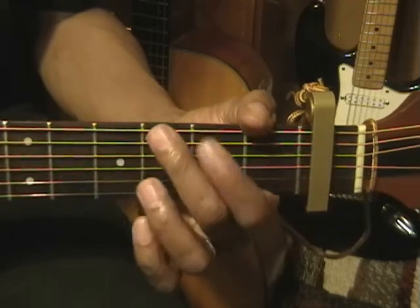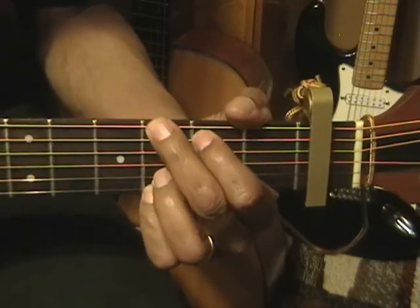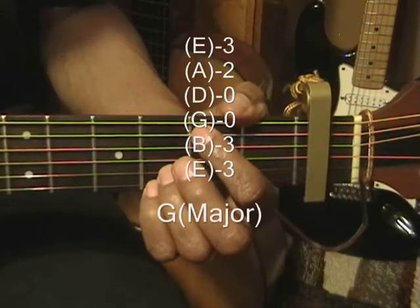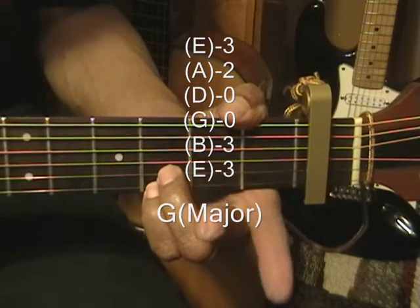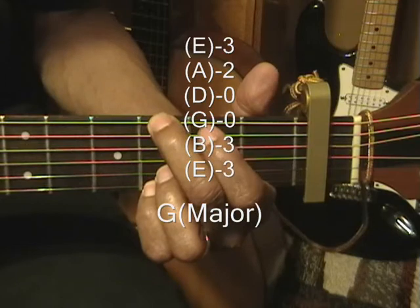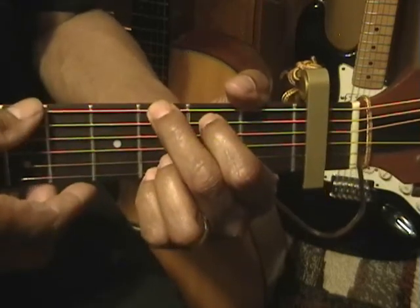Our last chord is G major. We have our ring finger and pinky finger on the third fret, B string and high E string. And we have our middle finger on the low E string, third fret. And the first finger on the A string, second fret. And we'll strum all the strings for that one.